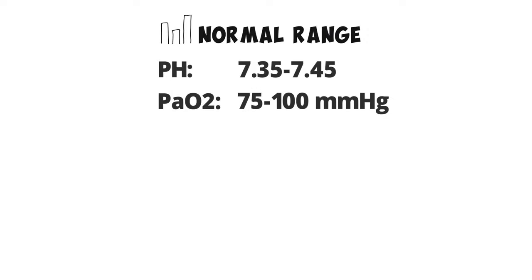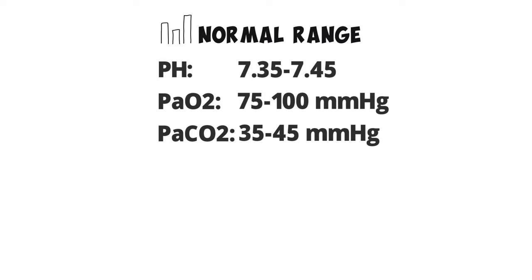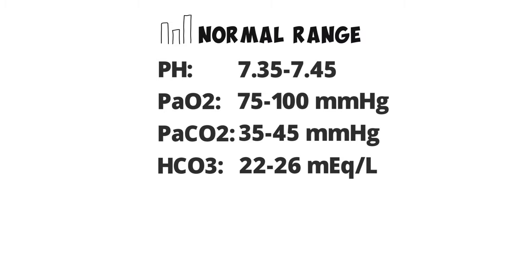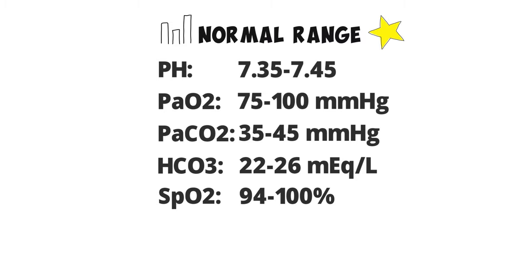These key elements all have different normal values, so we must talk about their ranges. The normal pH ranges from 7.35 to 7.45. The normal partial pressure of oxygen ranges from 75 to 100 mmHg. The normal partial pressure of carbon dioxide ranges from 35 to 45 mmHg. The normal bicarb ranges from 22 to 26 milliequivalents per liter. And the normal oxygen saturation ranges from 94 to 100%. It is important to keep in mind that normal value ranges may vary slightly in different publications, but these are typically the values that you will need to remember, especially in regards to the TMC exam.